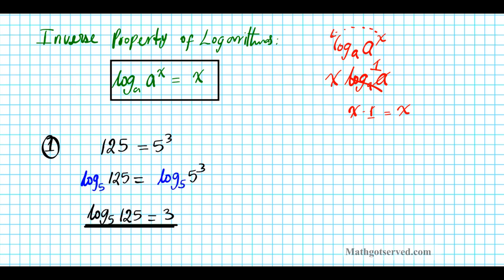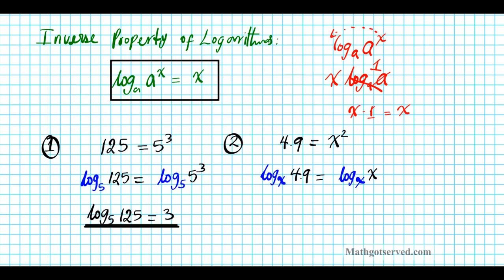Let's go ahead and try another example. What if we have the following exponential statement: 4.9 equals x to the second power? Remember the goal is to take the logarithm of both sides. What is the base of our logarithm going to be? The base is x, so we're going to take log base x of both sides of our equation. So we have log base x of 4.9 equals log base x of x to the second power.